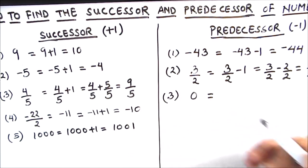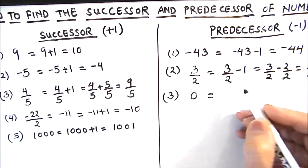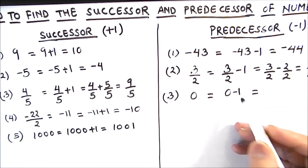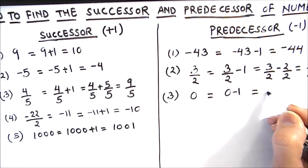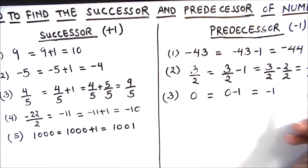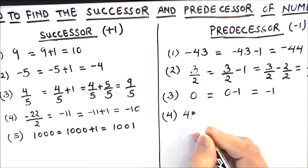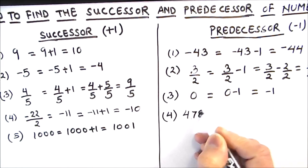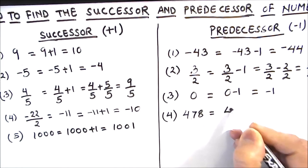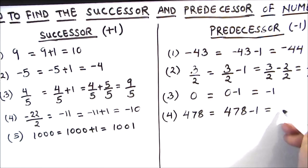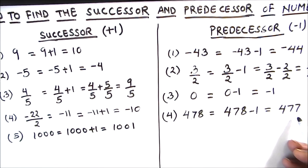Next we have the whole number 0, and we need to find its predecessor. So 0 minus 1 gives us negative 1. The predecessor of 0 is negative 1.